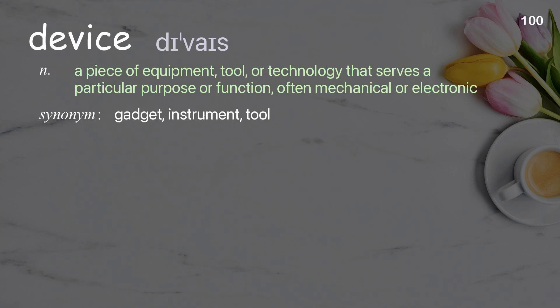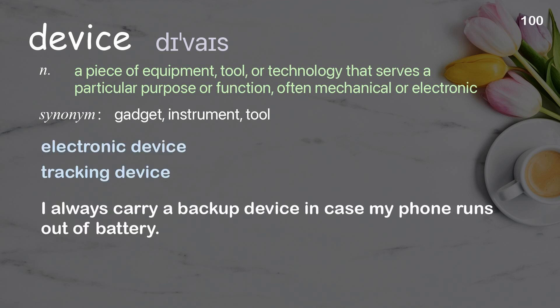Device: a piece of equipment, tool, or technology that serves a particular purpose or function, often mechanical or electronic. Examples: electronic device, tracking device. I always carry a backup device in case my phone runs out of battery.